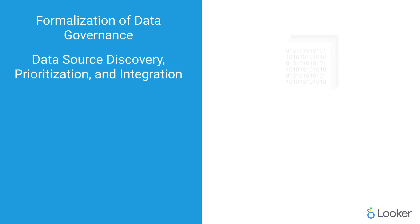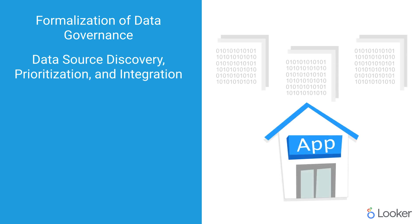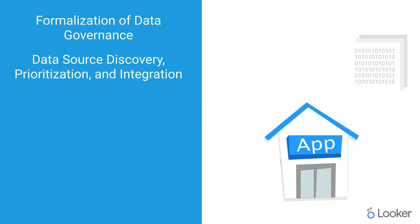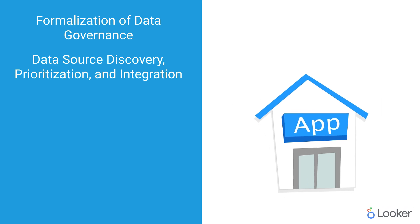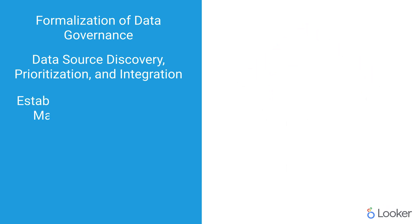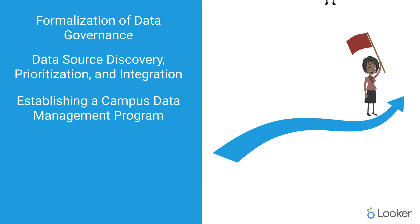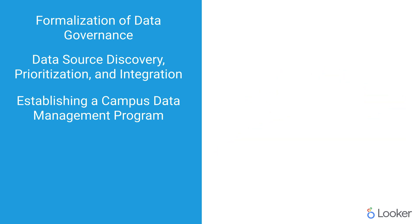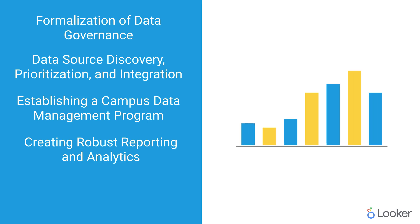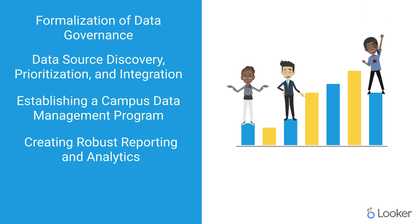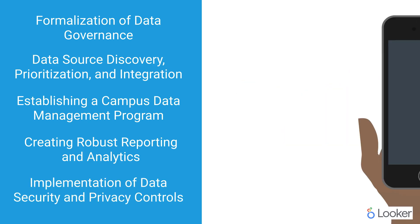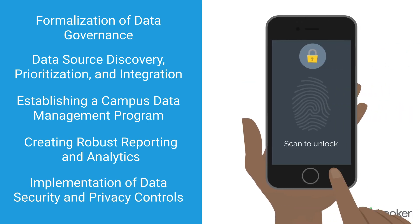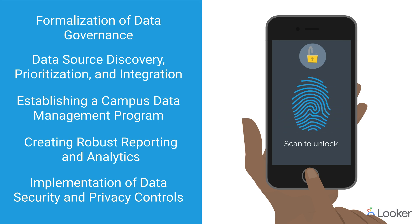Data source discovery, prioritization, and integration are accomplished by identifying the key data sources used by campus and then prioritizing bringing them into the new data management application. Having an established campus data management program helps implement a single place for faculty, staff, and students to get data for reporting and analysis in an easily accessible and user-friendly manner, along with controls that allow campus users to access the data they need and prevent unauthorized access.